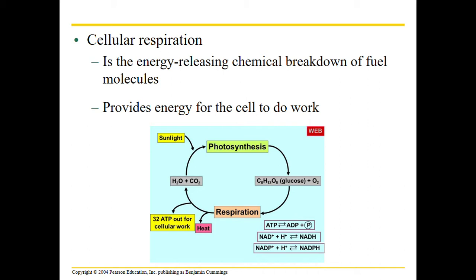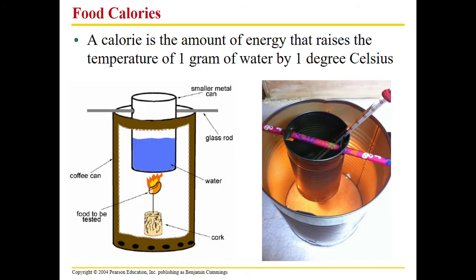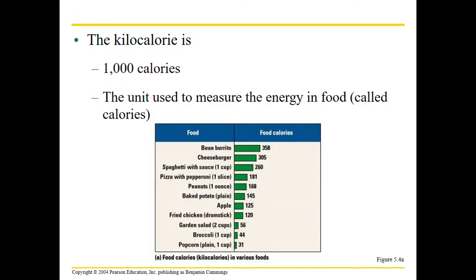When plants make sugar they can break it down to do the work their cells need. Now, what is a calorie exactly? A calorie is the amount of energy it takes to raise one gram of water by one degree Celsius. When talking about food, we talk about kilocalories — a thousand calories. Each food calorie means you can change a thousand grams of water by one degree Celsius.